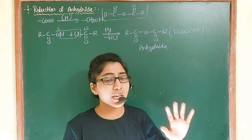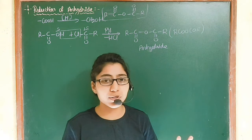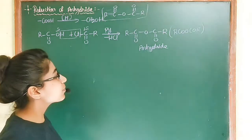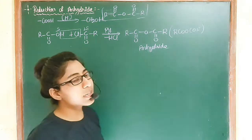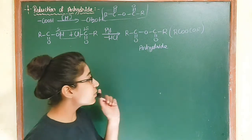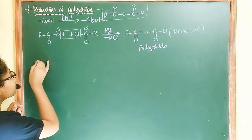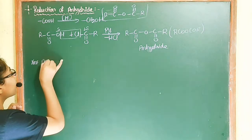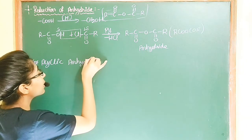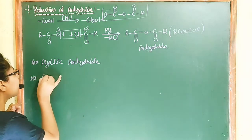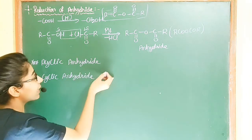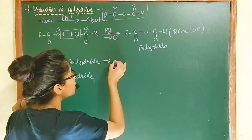Anhydride is also an acid derivative. So we have acid derivatives: ester, acid chloride, and the last acid derivative is anhydride. We will complete the last acid derivative in this video. After that, the reduction of acid derivatives will be complete, and we will do the next compounds. Reduction is a reagent-based study, so first we will see which reagent we will use here. We will use lithium aluminum hydride — LiAlH4.